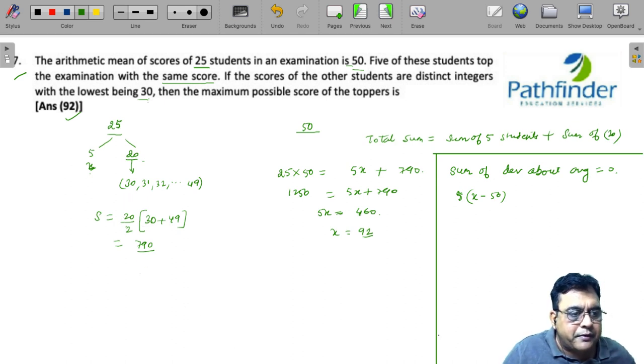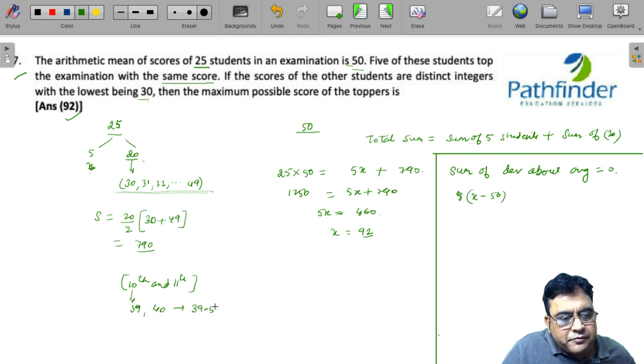If you look at the scores of the remaining 20 people, since these numbers are in arithmetic progression, the average must be the 10th and the 11th term. The 10th term from 30 will be 39 and the 11th term will be 40, so average of these terms must be 39.5. So deviation will be 39.5 minus 50.